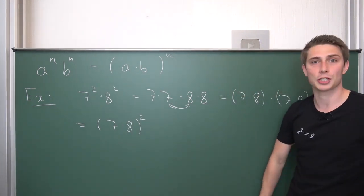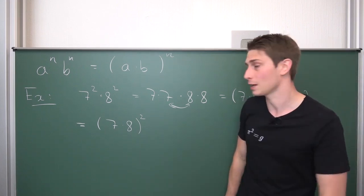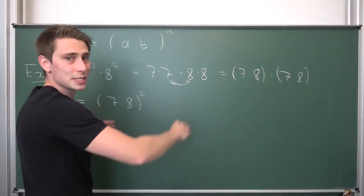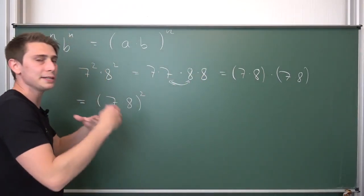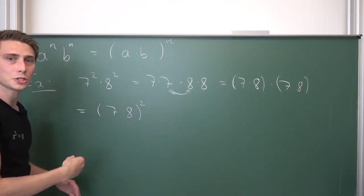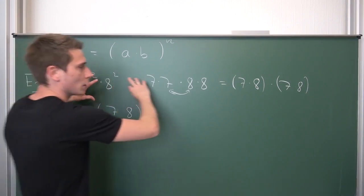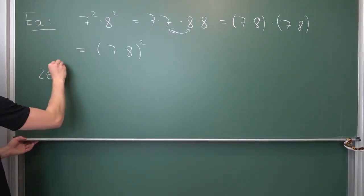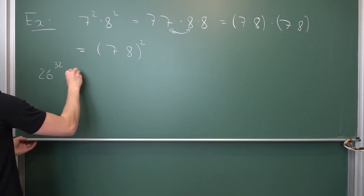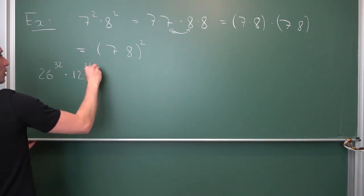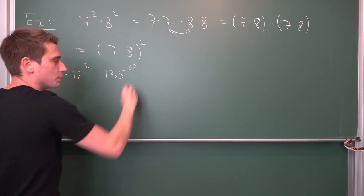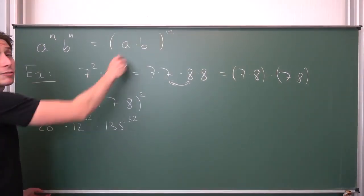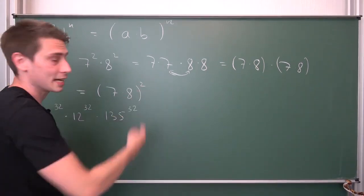And this is it. And now you can just generalize this thing. For example, if we take really big numbers, it's really no good writing all of this out for really big numbers and really huge exponents. You really need this calculation rule just because you won't be able to write all of this out if you have really big numbers. For example, 26 to the 32nd power times 12 to the 32nd power times 135 to the 32nd power. I mean, try writing all of this out, this won't help you.